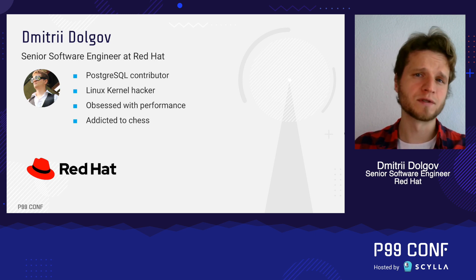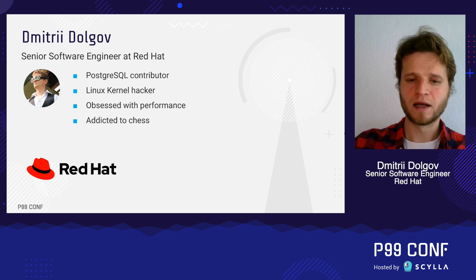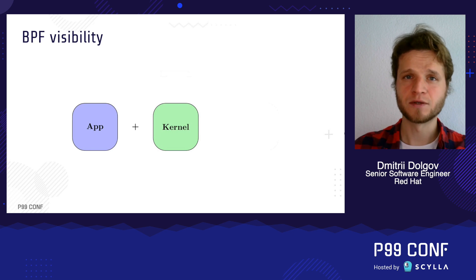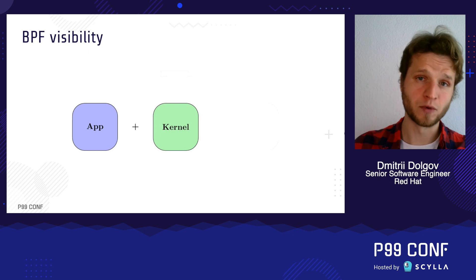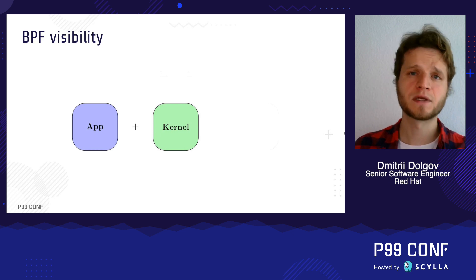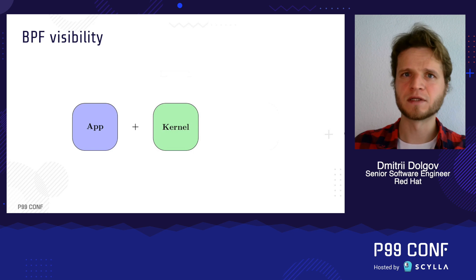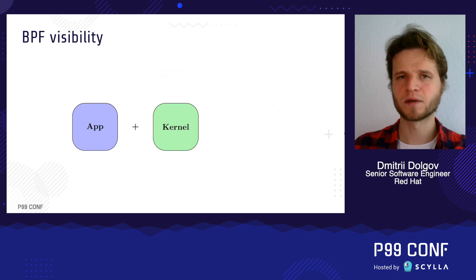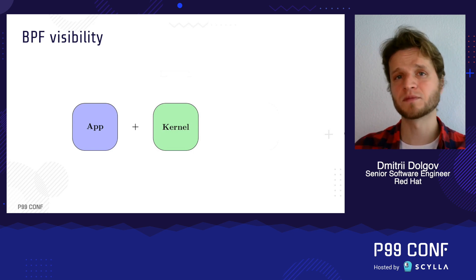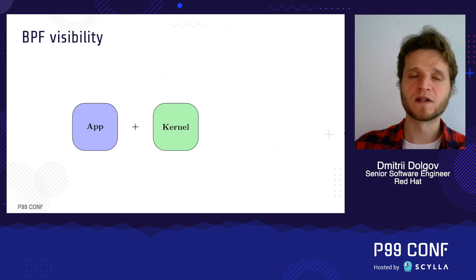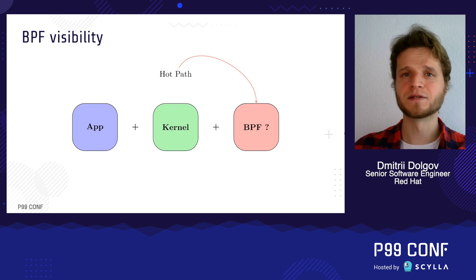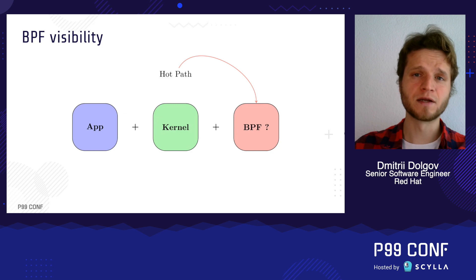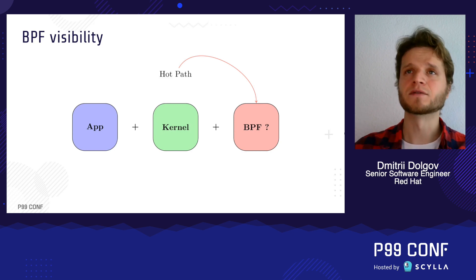It turns out to be quite an interesting and tricky challenge, and here's the reason why. Normally when we're talking about performance, everything is more or less clear from the visibility point of view. We have our user space application, we have some kernel part that it relies on, and we know how to profile both parts, get the required and relevant metrics. But if we extend this situation with some dynamic BPF, things get a little bit more tricky — it's not that clear how to get visibility into those parts.